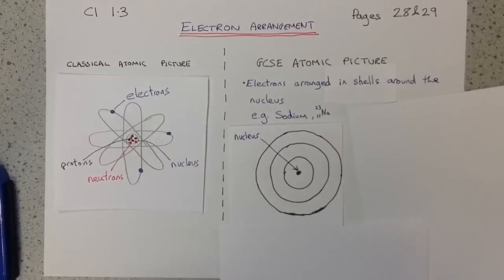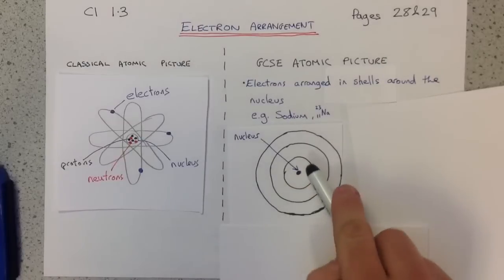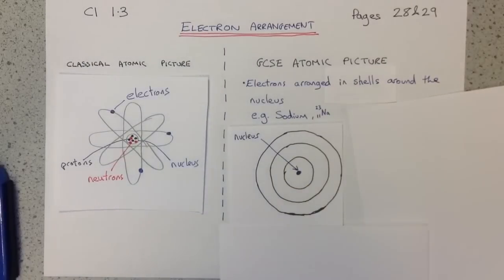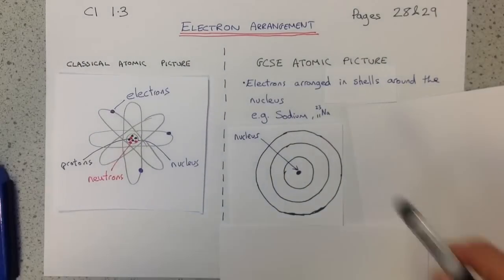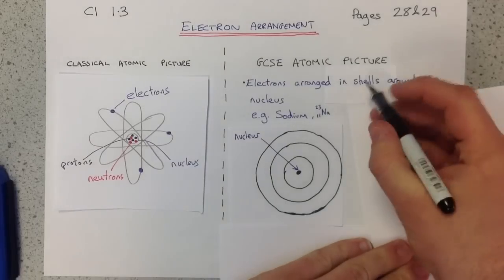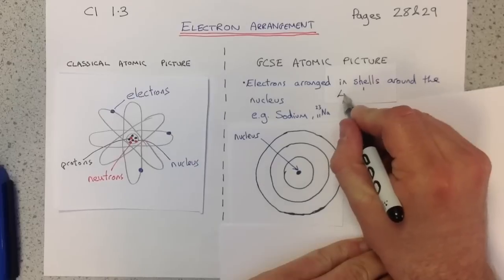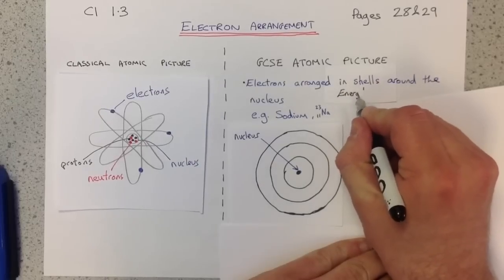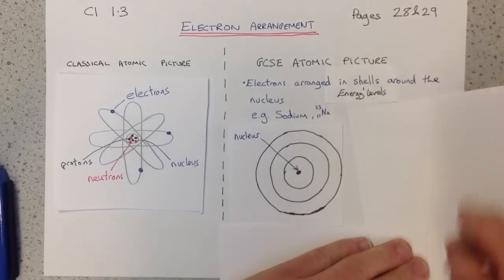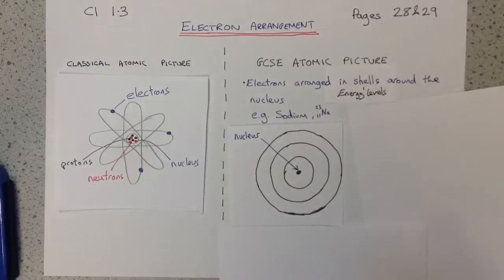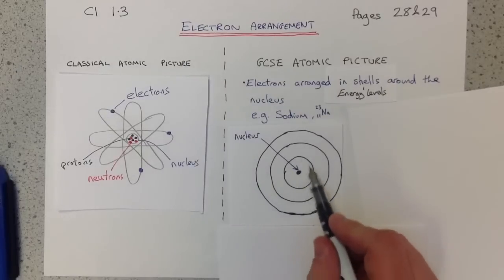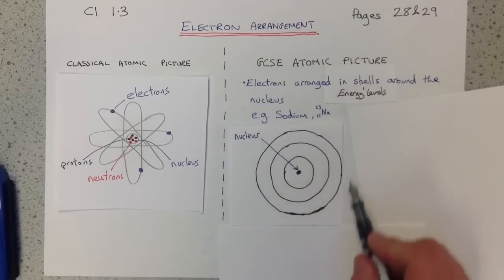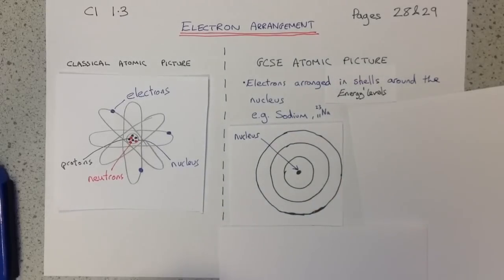So, here at GCSE, electrons are arranged in shells around the nucleus. We can see these shells here in the diagram of our example sodium that we're going to move on to. Our shells, we should note, are also called energy levels. The lowest energy levels are those closest to the nucleus; the highest energy levels are the ones furthest from the nucleus.